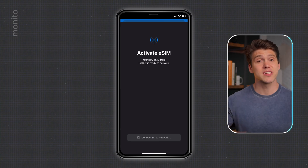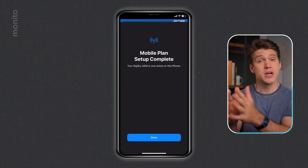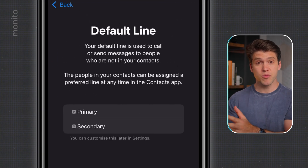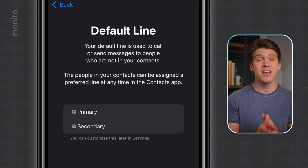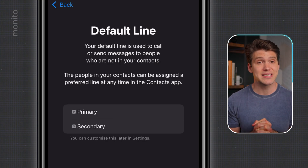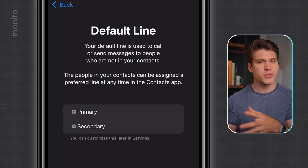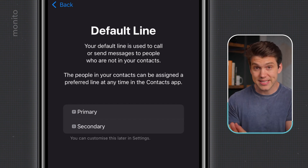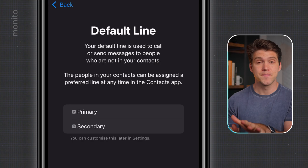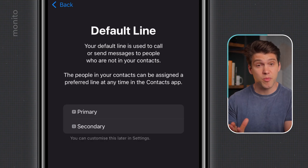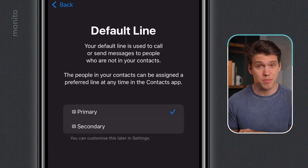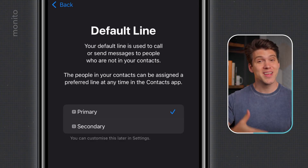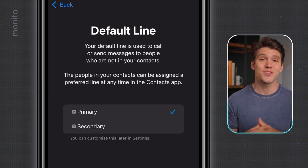Hopefully your phone will now say 'mobile plan setup complete'. If so, go ahead and tap done. We're now going to select our default line. Here we have two options: primary, which is our normal regular SIM, and secondary, which represents our newly installed GigSky eSIM. For the default line, I recommend keeping this as primary. This eSIM does not come with a telephone number, so if you still want to be able to make and receive calls and texts, keep this as primary. This won't affect your data usage and has nothing to do with roaming.